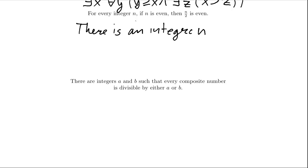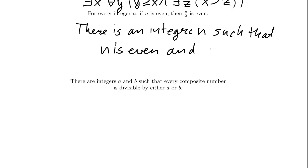So we want to say: there is an integer n such that n is even — the first part is true — and the second part is false, meaning n over 2 is not even, also known as odd. And there's the negation. If it's false that for every integer n, if n is even then n over 2 is even, then it is true that there is an integer n such that n is even but n over 2 is odd.